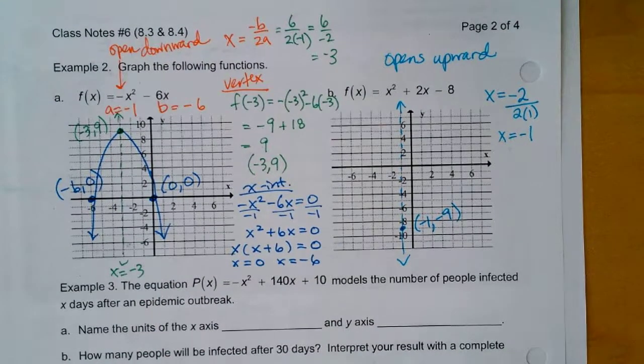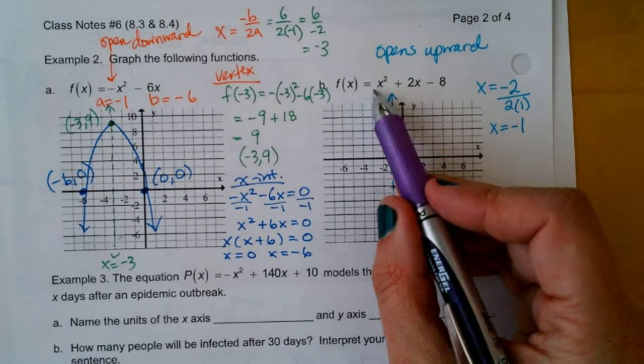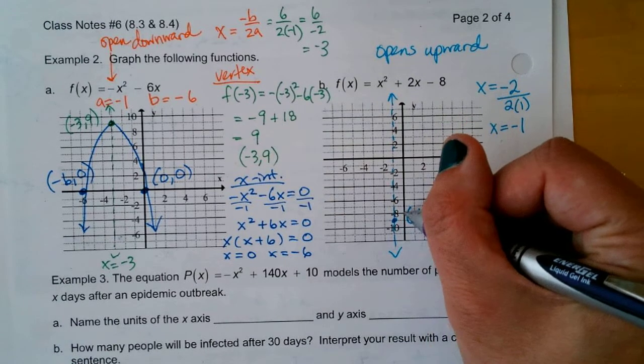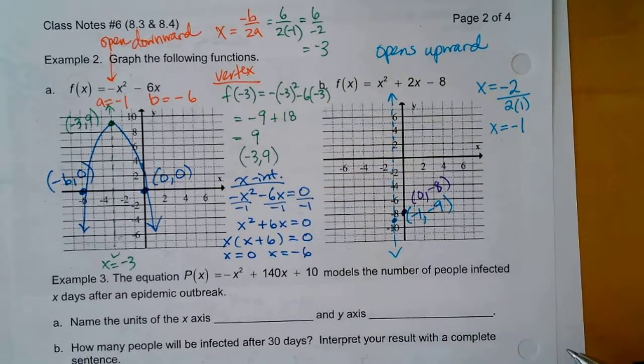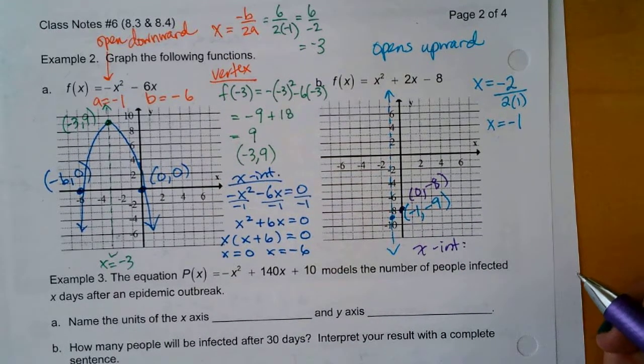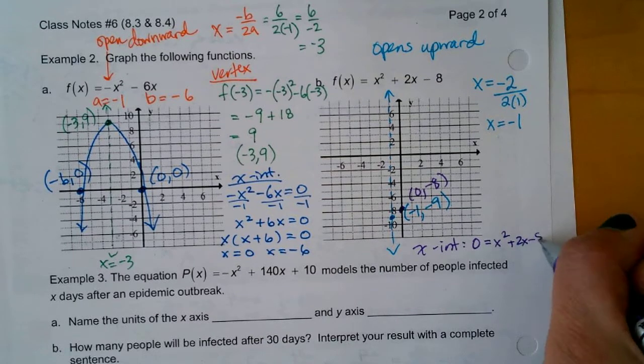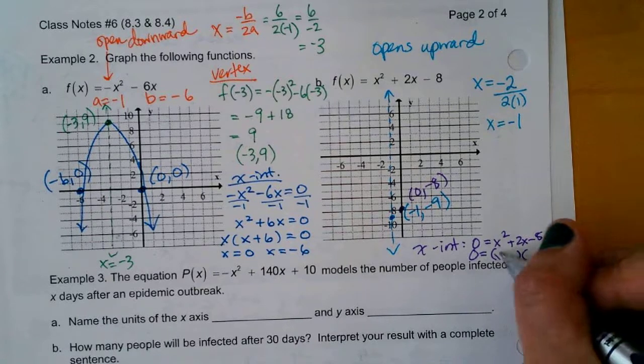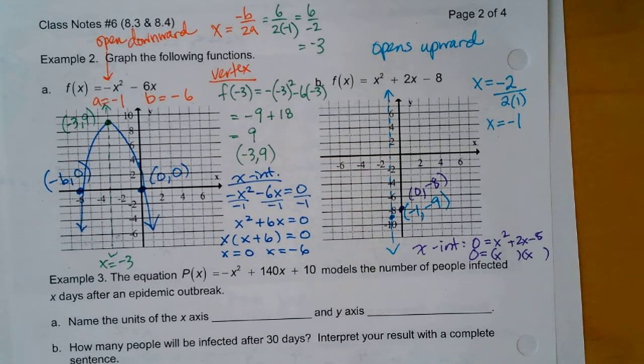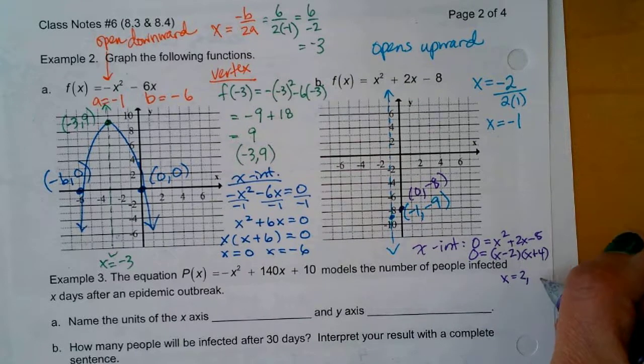Okay, so our vertex here is negative 1, negative 9. Who can tell me what the y-intercept is? The y-intercept is another easy point to find. Can you just see it by looking at the equation? Who sees the y-intercept? When x is 0, what's left? Negative 8. So here we have 0, negative 8 is the y-intercept. And then how do we find the x-intercepts? Set y to 0. x squared plus 2x minus 8. We want to factor that. x, x. Two numbers that multiply to negative 8 and add to 2. Negative 2, positive 4. And so what are your x-intercepts? 2 and negative 4.